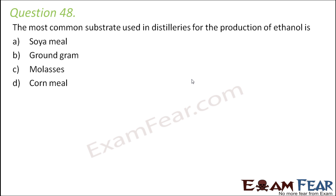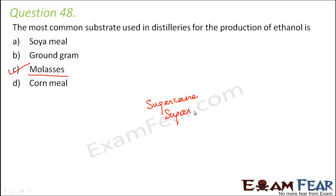Question number 48: The most common substrate used in distilleries for the production of ethanol is — (A) soya meal, (B) ground gram, (C) molasses, or (D) corn meal. Molasses acts as the base material for fermentation into rum, so molasses is the right option. Molasses is also fermented to produce ethanol used as an alternative fuel in motor vehicles. Molasses is basically a byproduct of refining sugarcane or sugar beet into sugar.